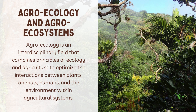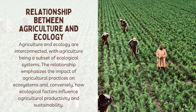The relationship between agriculture and ecology: agriculture is deeply intertwined with ecological processes. Agroecology aims to optimize agricultural practices while minimizing environmental impact. Agricultural ecosystems — agroecosystems — are viewed from an ecological perspective, considering the complex interactions between crops, animals, humans, and the environment.